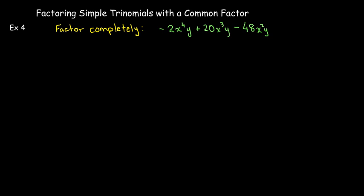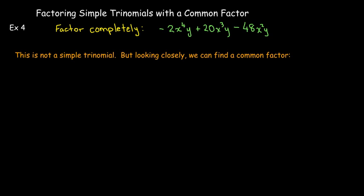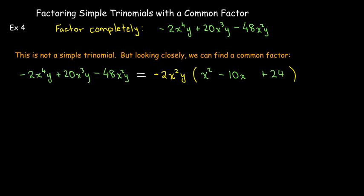Here we have another trinomial which is not a simple trinomial. But again, we have a common factor, and here is a case where we would like to factor out a negative common factor. The reason is that I don't want a negative x² inside the parentheses — I'd like to have a positive x².